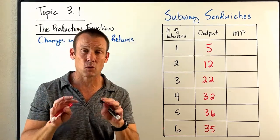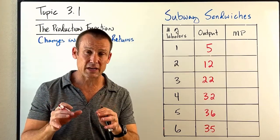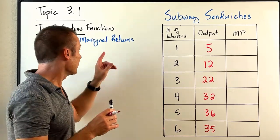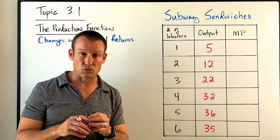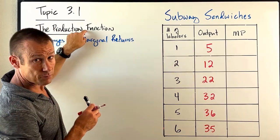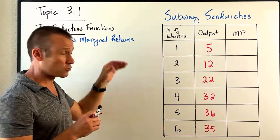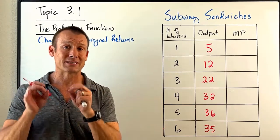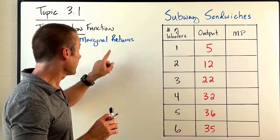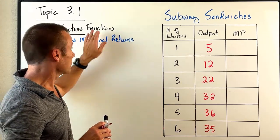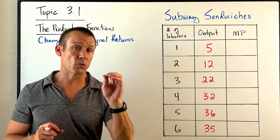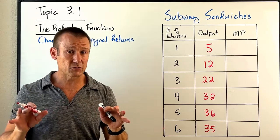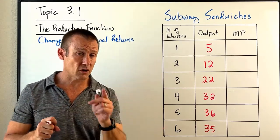This video is so important — it's foundational to understanding the cost structure of a business, especially one that makes a good. Marginal returns: what is that? It's our change in output when we change a variable input by one, keeping all other inputs constant. It's important to understand that when we study marginal returns and the production function, we are in the short run, which means we have both fixed cost and variable cost. In the long run, all you have is variable cost, but we're in the short run.